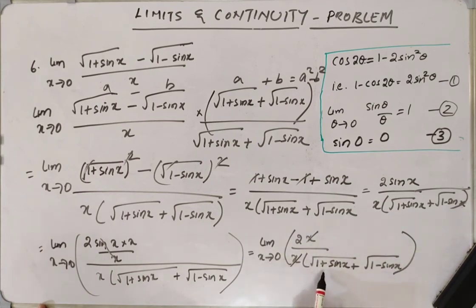We can substitute x as 0 here. Because we know sin 0 is 0. So when you put x as 0, you will get sin 0, which is nothing but 0.